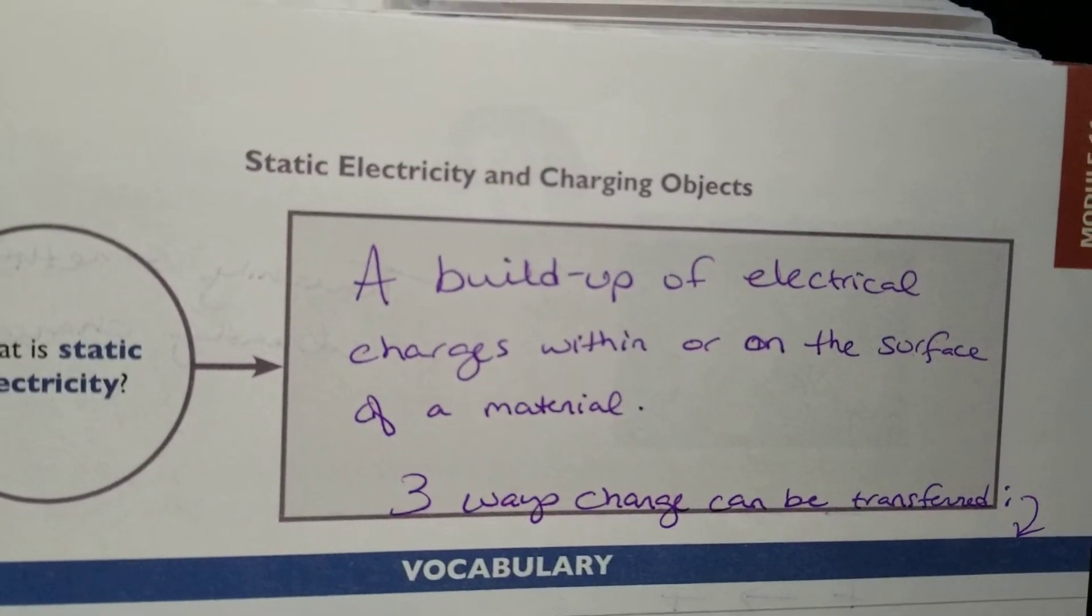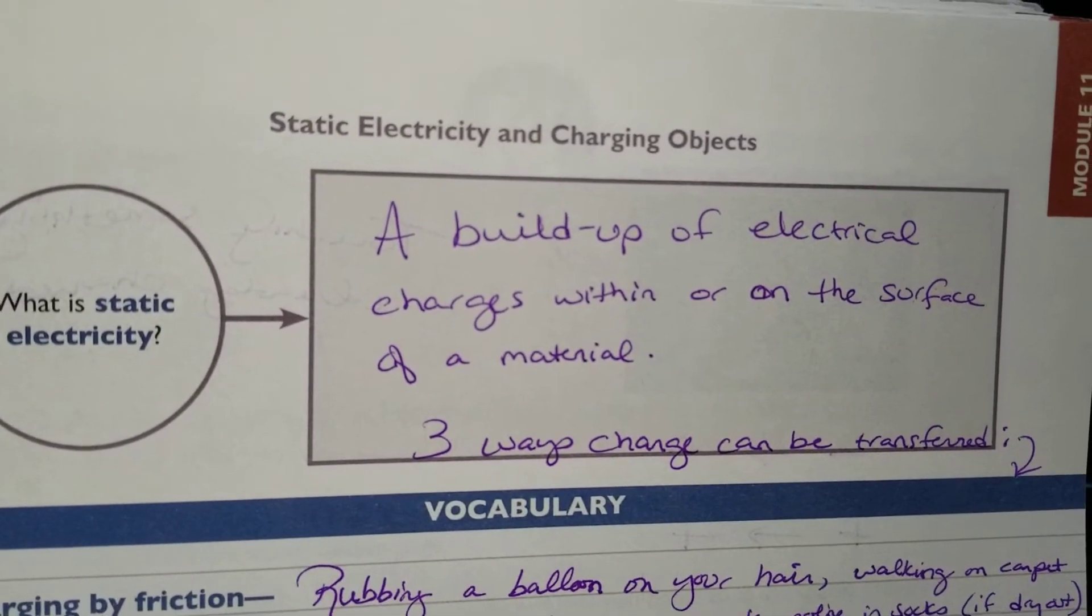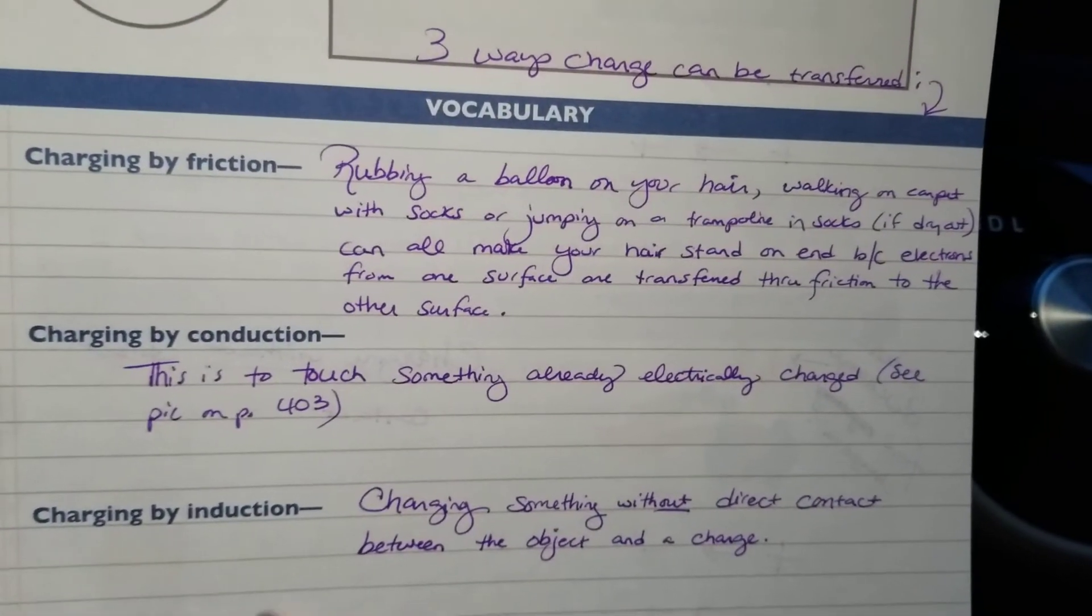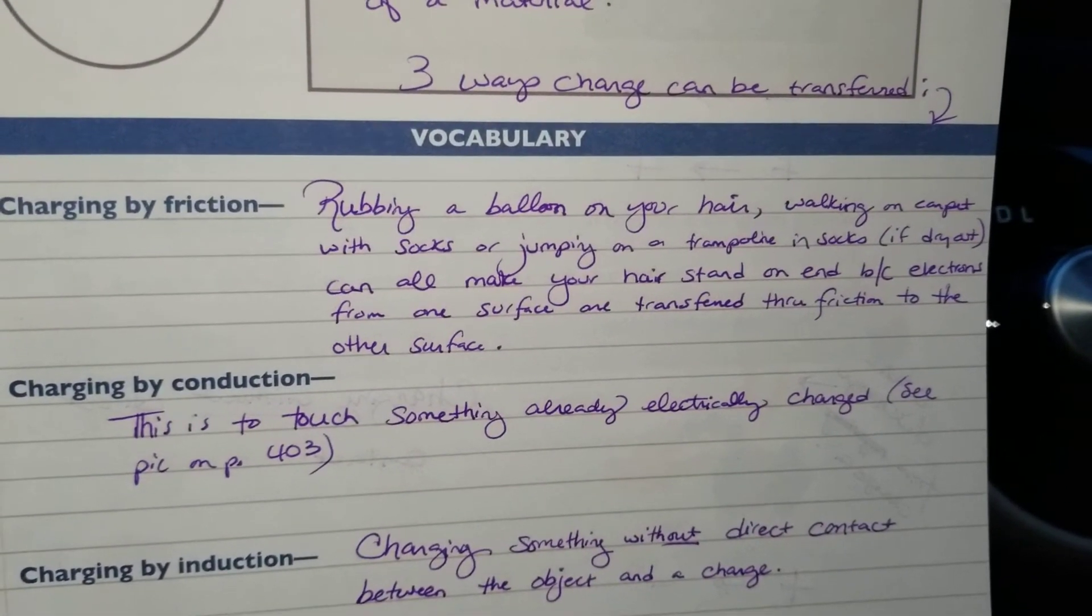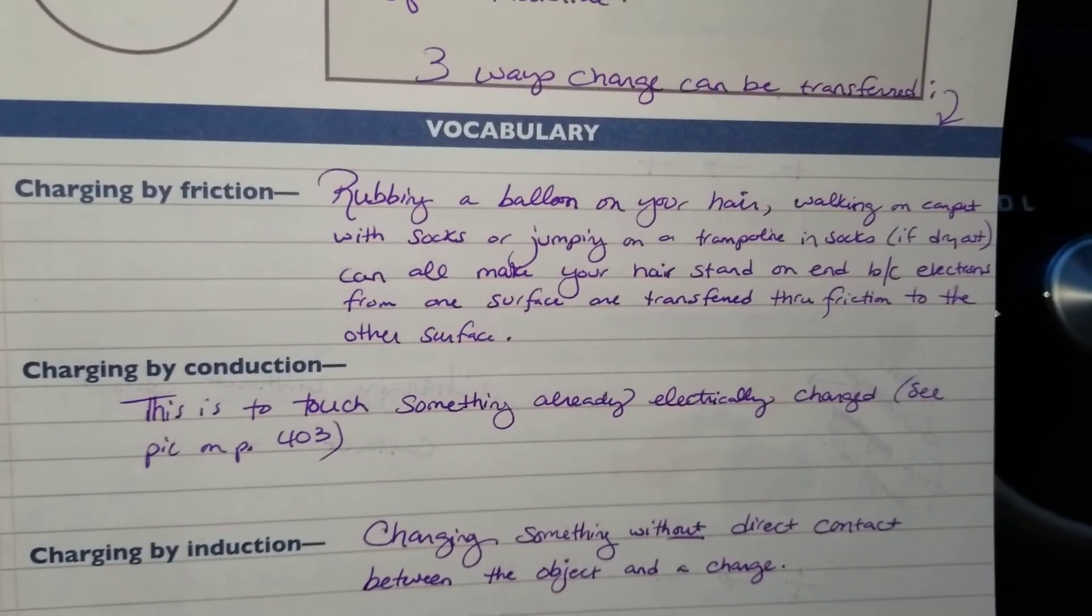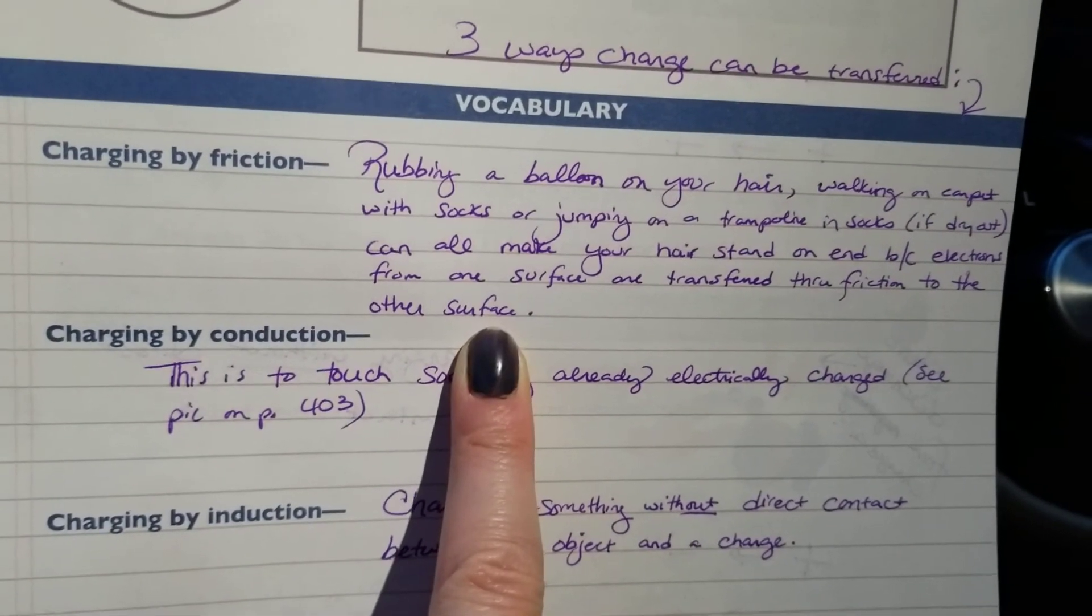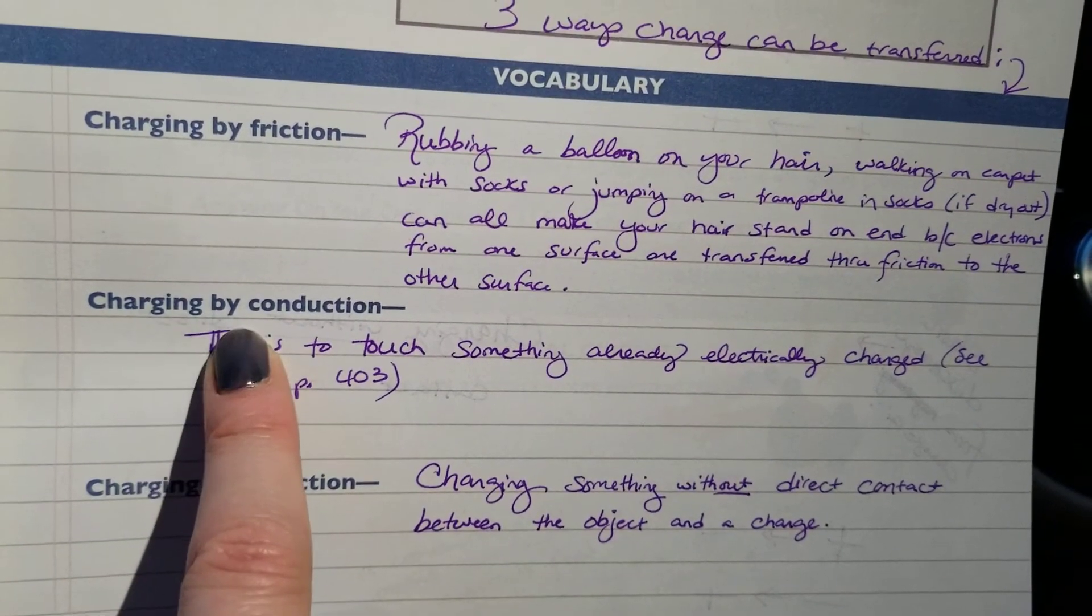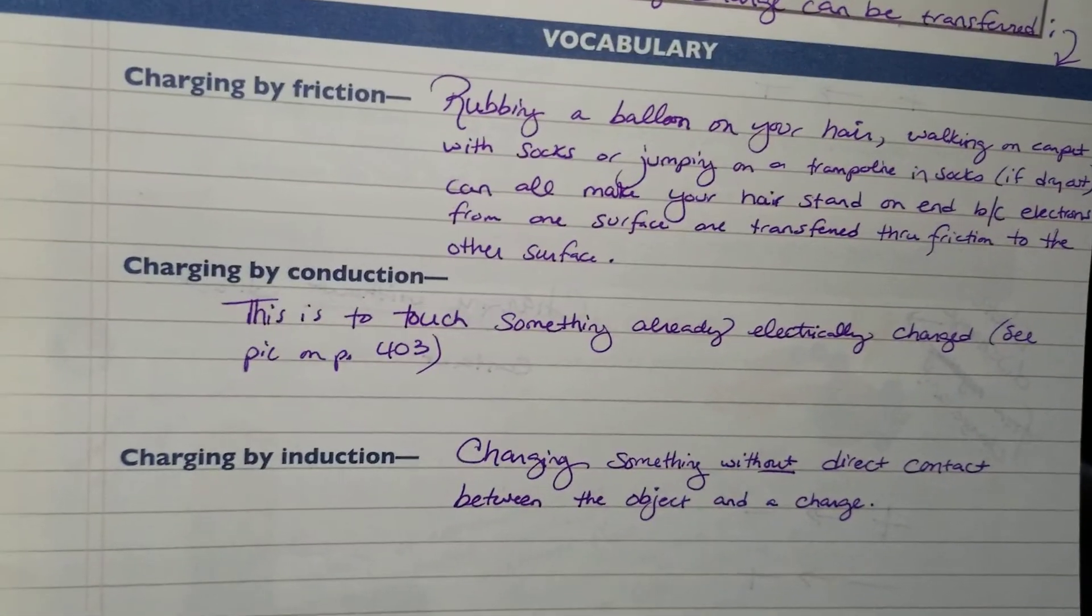Page 337. What is static electricity? I always just think of those balloons getting rubbed on your hair and your hair standing up. It is the buildup of electrical charges within or on the surface of a material. Three ways charge can be transferred. One, two, three. They're here and they're not too overwhelming. Charging by friction. That's the rubbing the balloon on your hair. You can walk on carpet with socks or jumping on a trampoline in socks if it's dry. All of those can make your hair stand on the end because electrons from one surface are transferred through friction to the other surface.